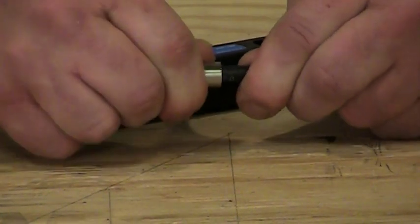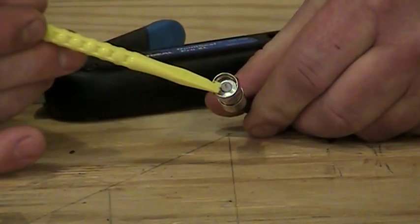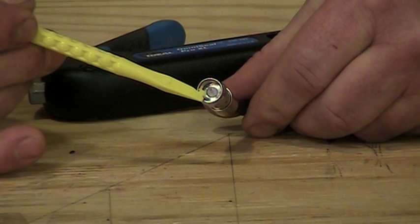So we want to push the connector on until the white dielectric ends up being even or flush with the front of the fitting like that. And we know now it's ready to be compressed.